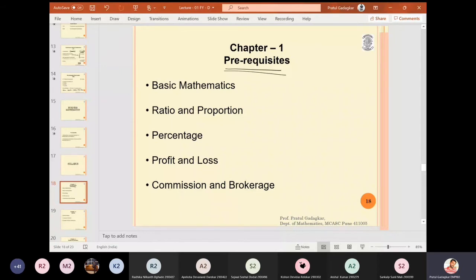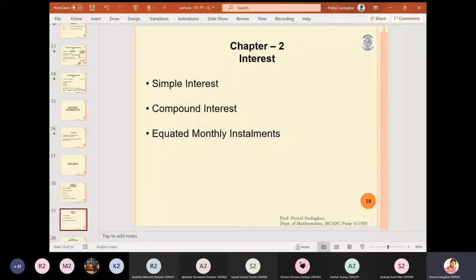The second chapter that will be covered will be Interest. In this chapter we have three types of subtopics: first will be simple interest, then we will have compound interest, and then we will have equated monthly installments, means EMIs.